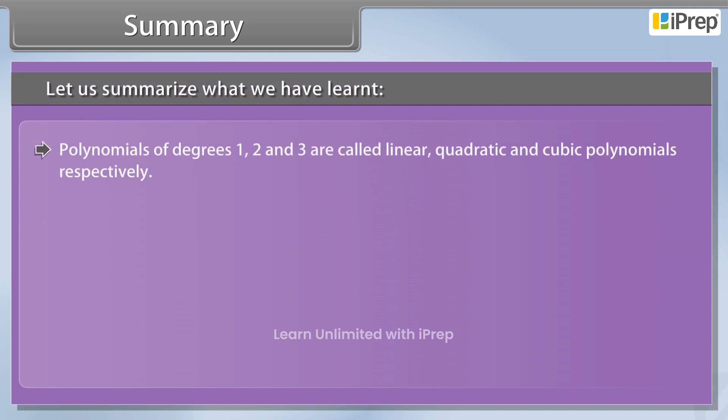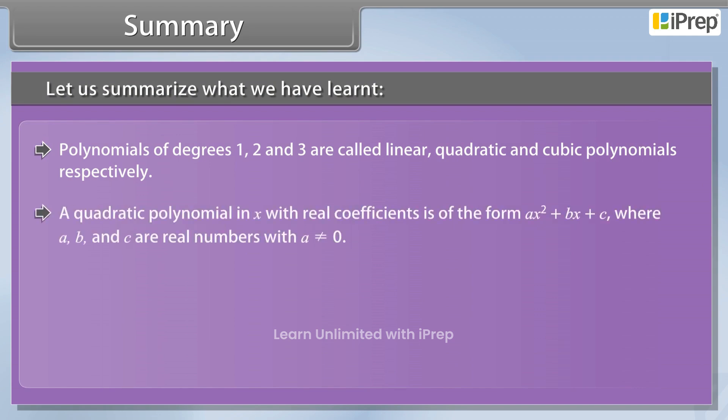Polynomials of degrees 1, 2 and 3 are called linear, quadratic and cubic polynomials respectively. A quadratic polynomial in X with real coefficients is of the form AX squared plus BX plus C, where A, B and C are real numbers with A is not equal to 0.